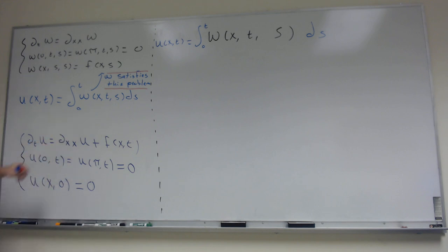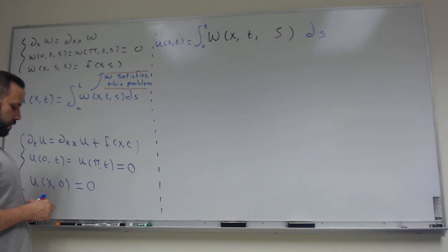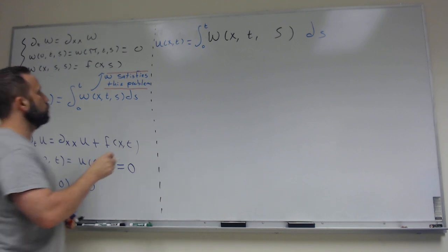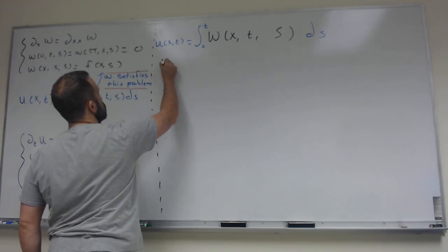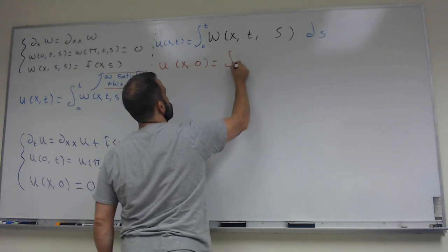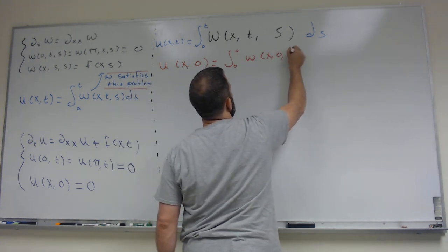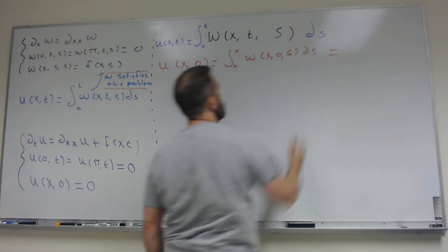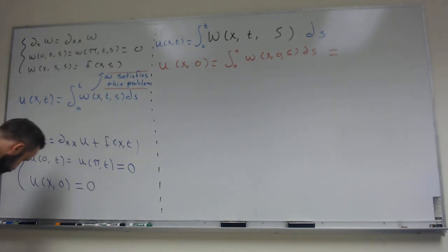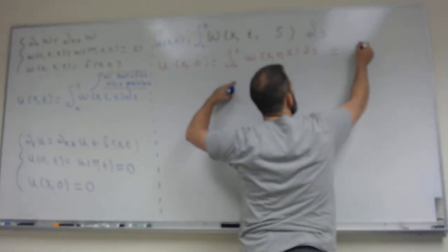So I want to show that this function satisfies these conditions. Let me start with maybe the easiest one — I want to show that it satisfies the initial condition. So I'm going to plug in t = 0. If you plug in t = 0, u(x,0) is the integral from 0 to 0 of w(x,0,s) ds. We're integrating a function over a zero-length interval, so that's 0.